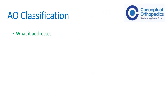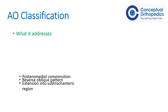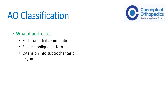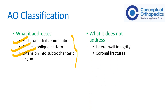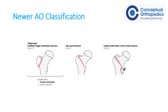The original AO classification takes into consideration posteromedial comminution, the reverse oblique fracture pattern, and extension into the subtrochanteric region, classifying all these as unstable fractures. However, the older AO classification does not address lateral wall integrity or coronal fractures. To overcome all these deficiencies, AO in 2018 proposed a refined classification system.